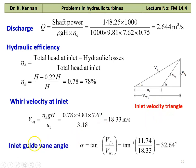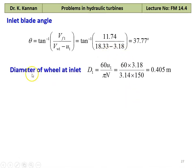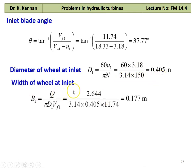Referring to the inlet velocity triangle, we calculate the inlet guide vane angle. Alpha equal to tan inverse of Vf1 divided by Vw1, which is tan inverse of 11.74 divided by 18.33 equal to 32.64 degrees. Inlet blade angle theta equal to tan inverse of Vf1 divided by (Vw1 minus U1), which is tan inverse of 11.74 divided by (18.33 minus 3.18) equal to 37.77 degrees. Diameter of the wheel at the inlet: D1 equal to 60 U1 divided by pi into N, which is 60 into 3.18 divided by 3.14 into 150 equal to 0.405 meter. Width of the wheel at the inlet: B1 equal to Q divided by pi D1 into Vf1, which is 2.644 divided by 3.14 into 0.405 into 11.74 equal to 0.177 meter.